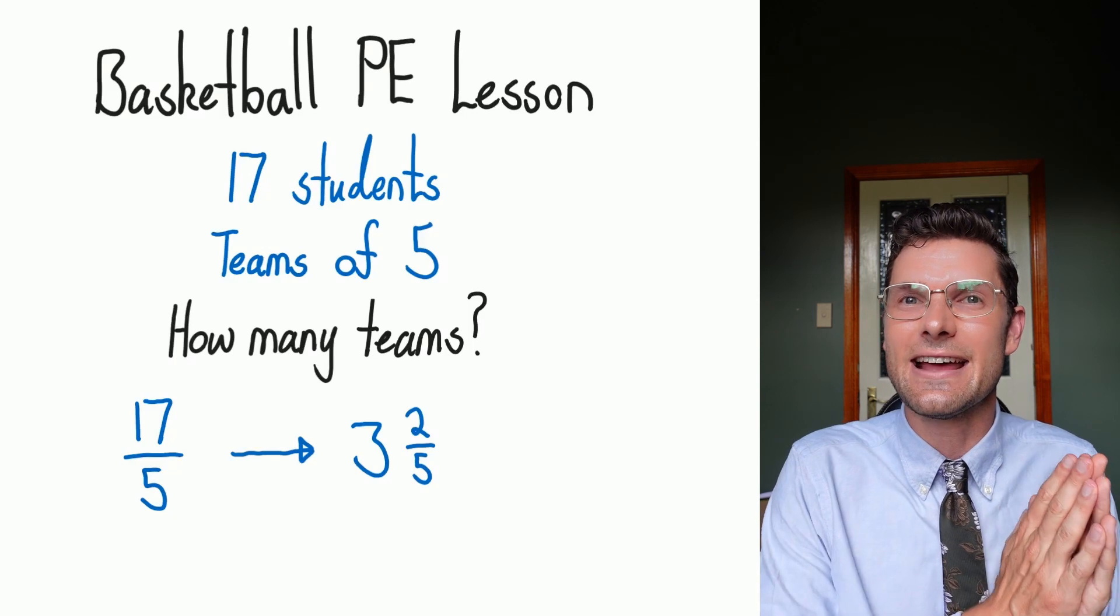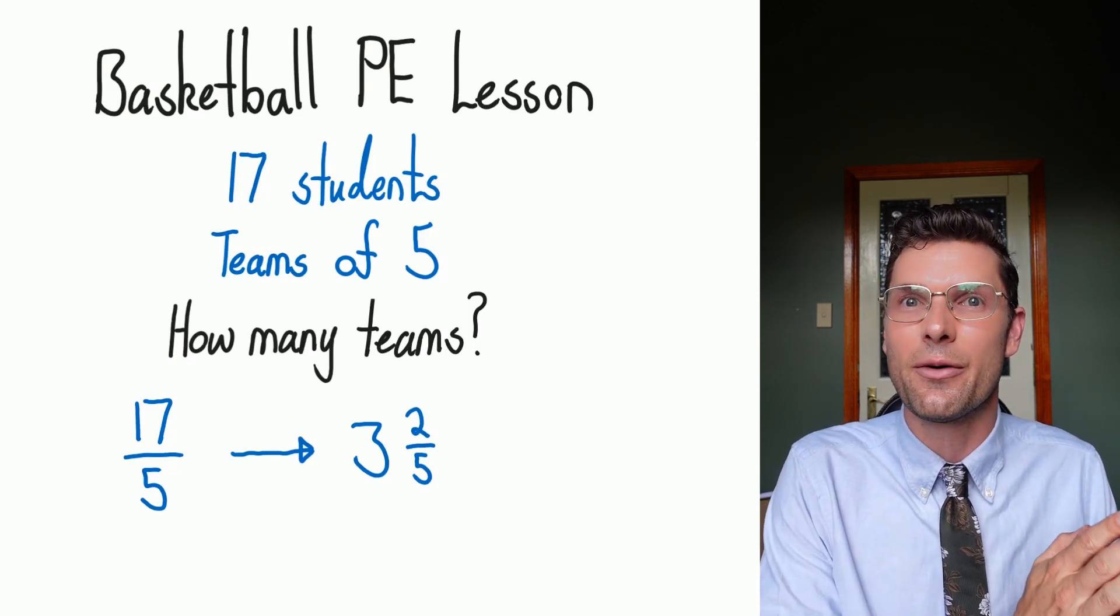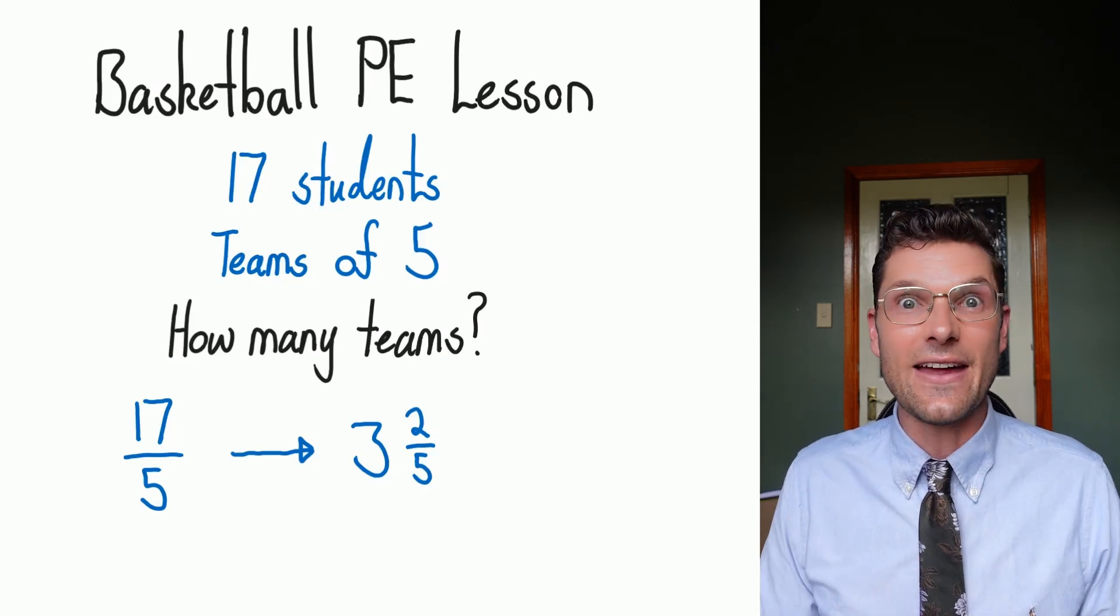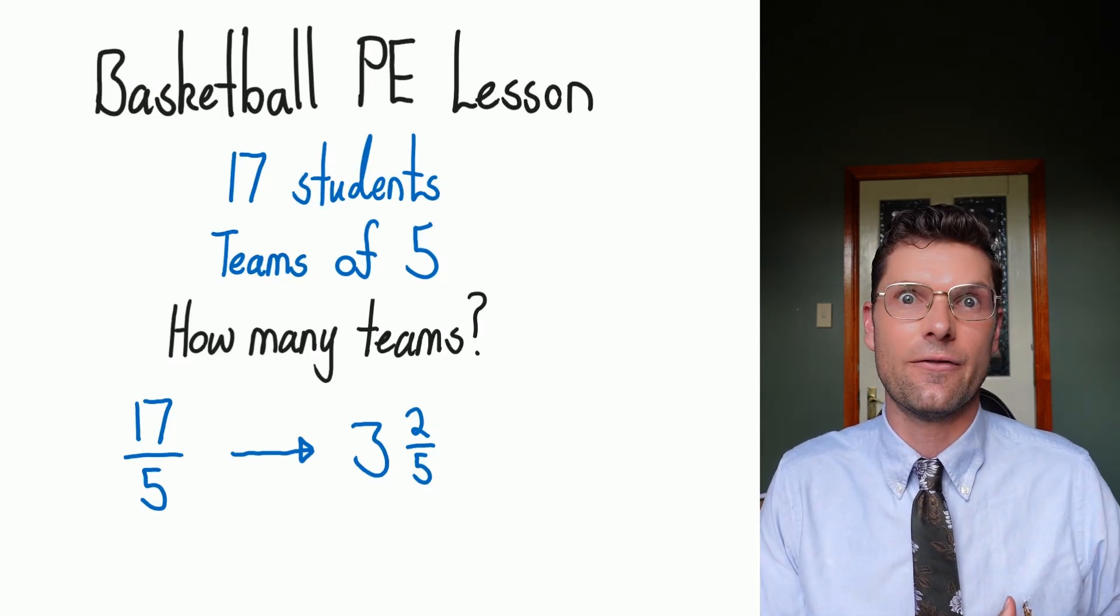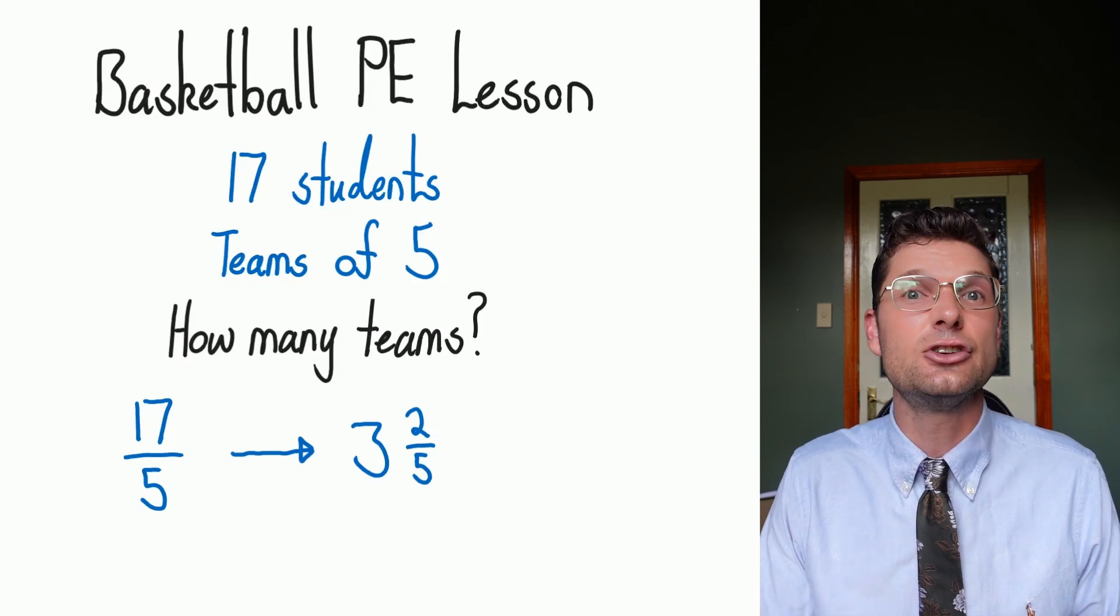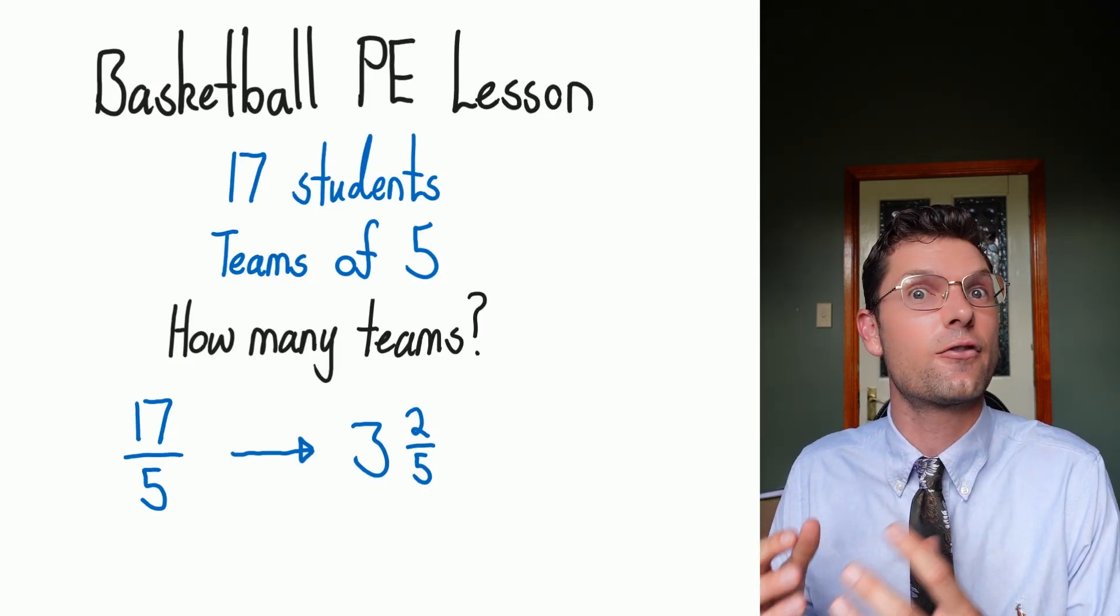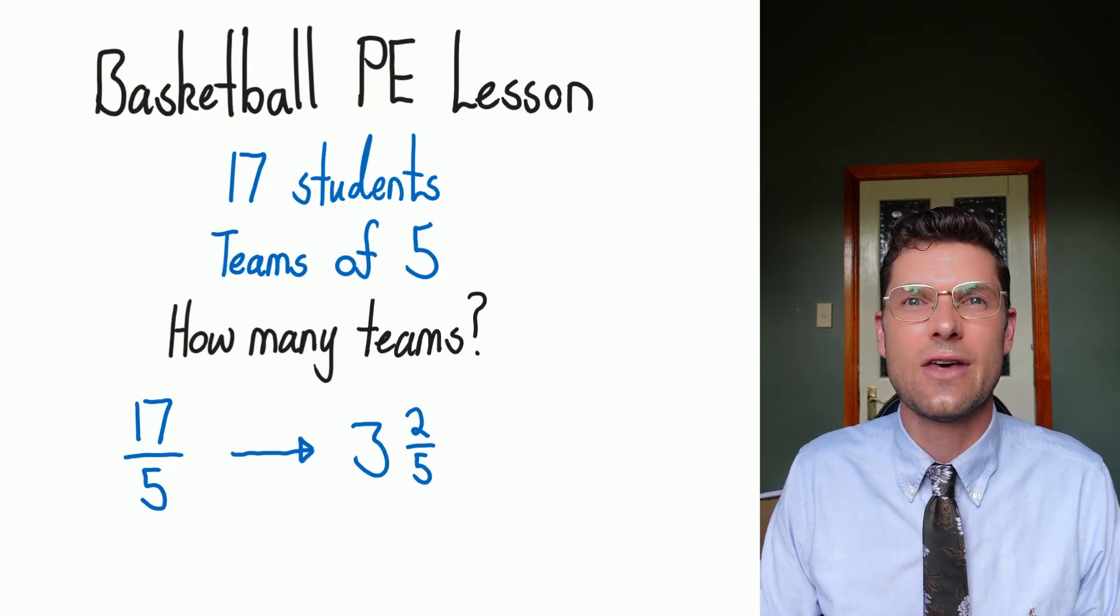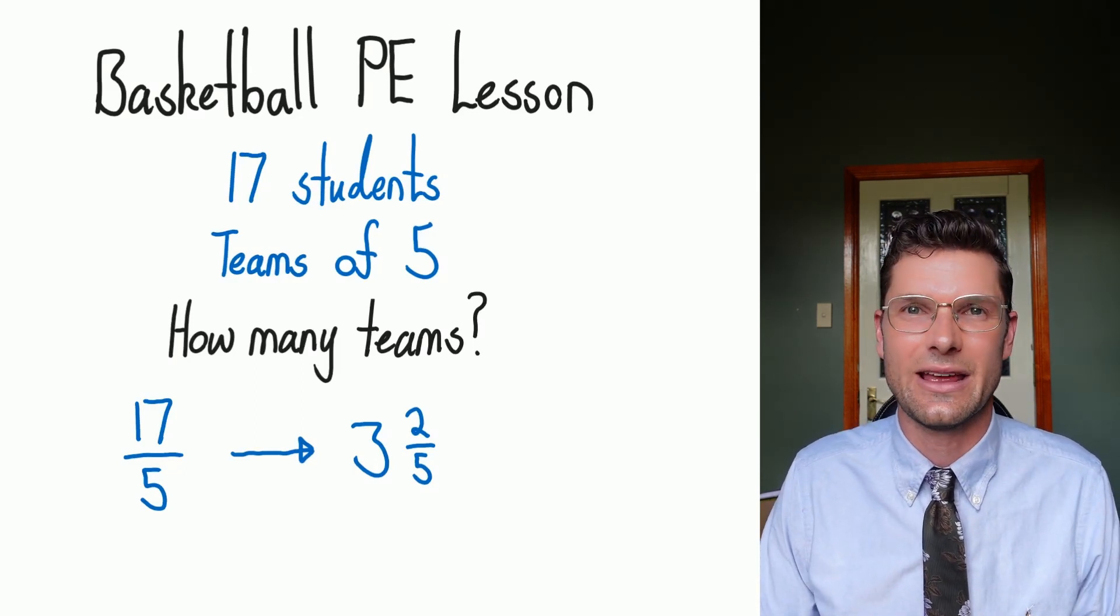So what we've done here is we've taken our 17 over five, our improper fraction, and converted it incredibly easily into a mixed numeral. And that's the skill for this whole lesson. Can I take a weird fraction, 17 over five, and turn that into a mixed number, where I've got a whole number, three, and then just how many people are left over. If you can do that, you're gonna find this lesson incredibly easy.